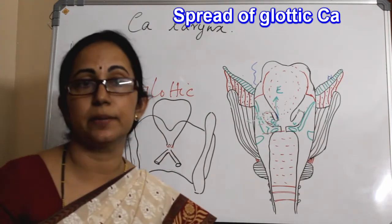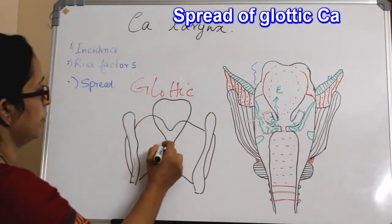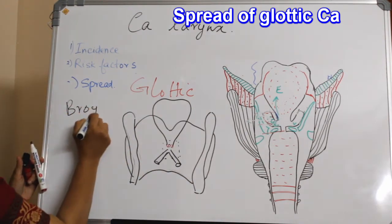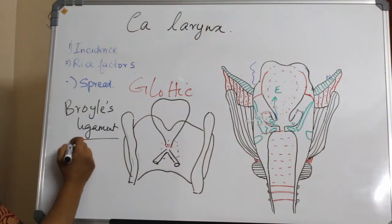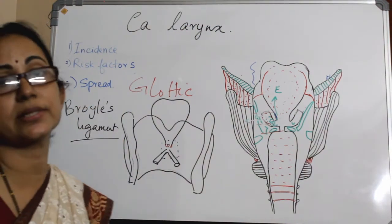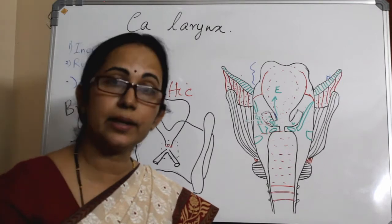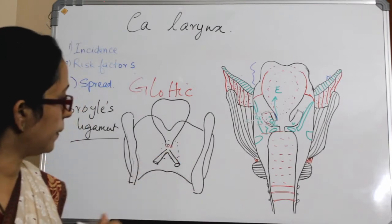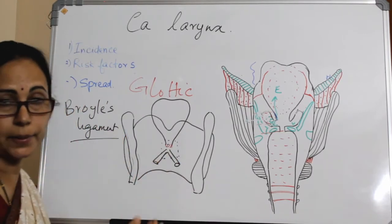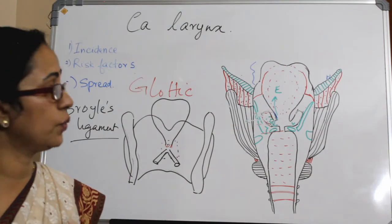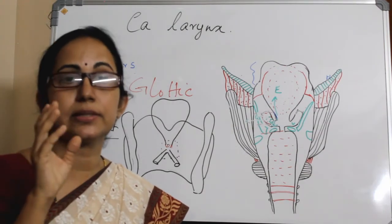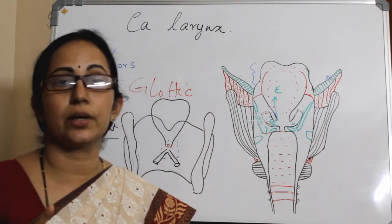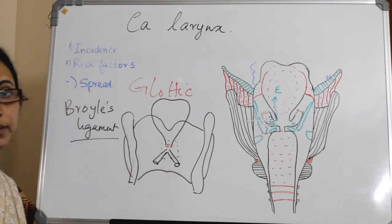That area forms Broyle's ligament. And what is Broyle's ligament? It contains four structures: the vocal ligament, the conus elasticus, the thyroepiglottic ligament, and the inner perichondrium of the thyroid cartilage. Broyle's ligament contains the conus elasticus, the vocal ligament, the inner perichondrium of the thyroid cartilage, and the thyroepiglottic ligament.